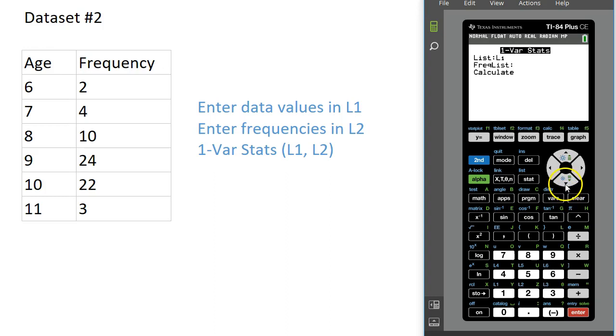The only thing we're going to do different is now we're going to put in a frequency list, because that's what our second column of data were. Our list will be List 1, that's where we put the age values, and our frequency list is List 2.